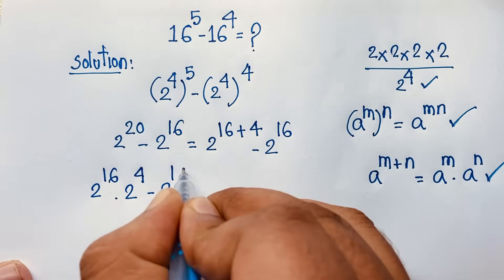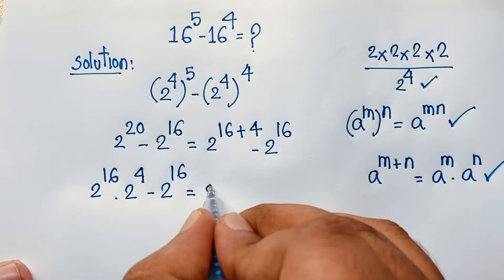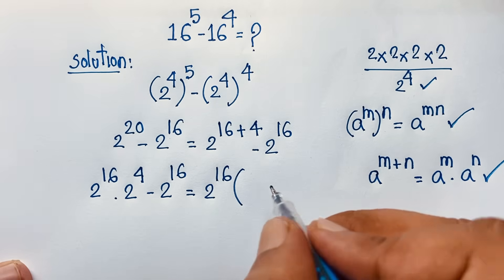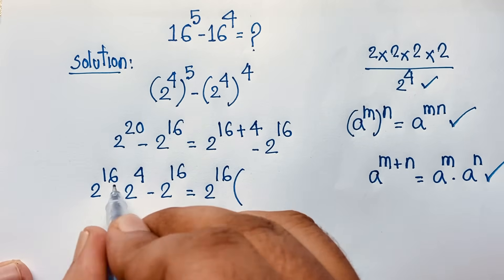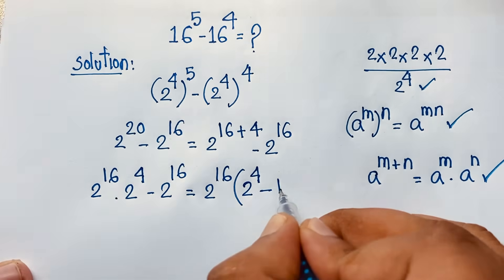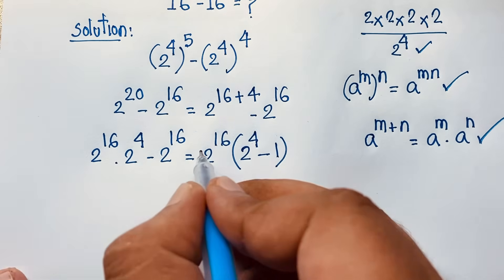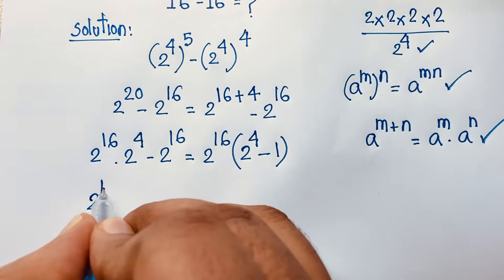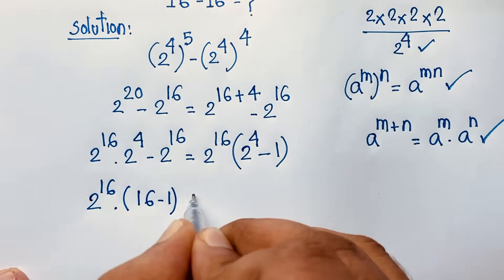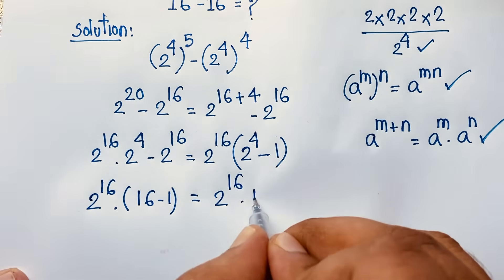So our expression becomes 2 to the power 16 times 2 to the power 4, minus 2 to the power 16. Here 2 to the power 16 is common. Taking 2^16 as a common factor, we get 2 to the power 16 times (2 to the power 4 minus 1), which is 2^16 times (16 minus 1), equals 2^16 times 15.